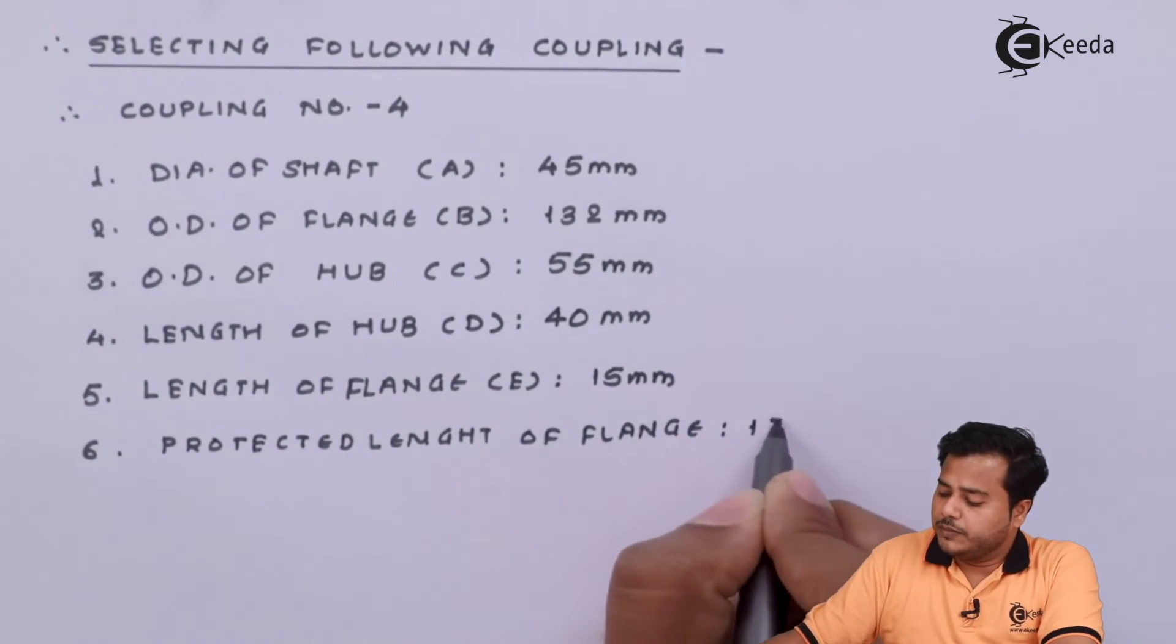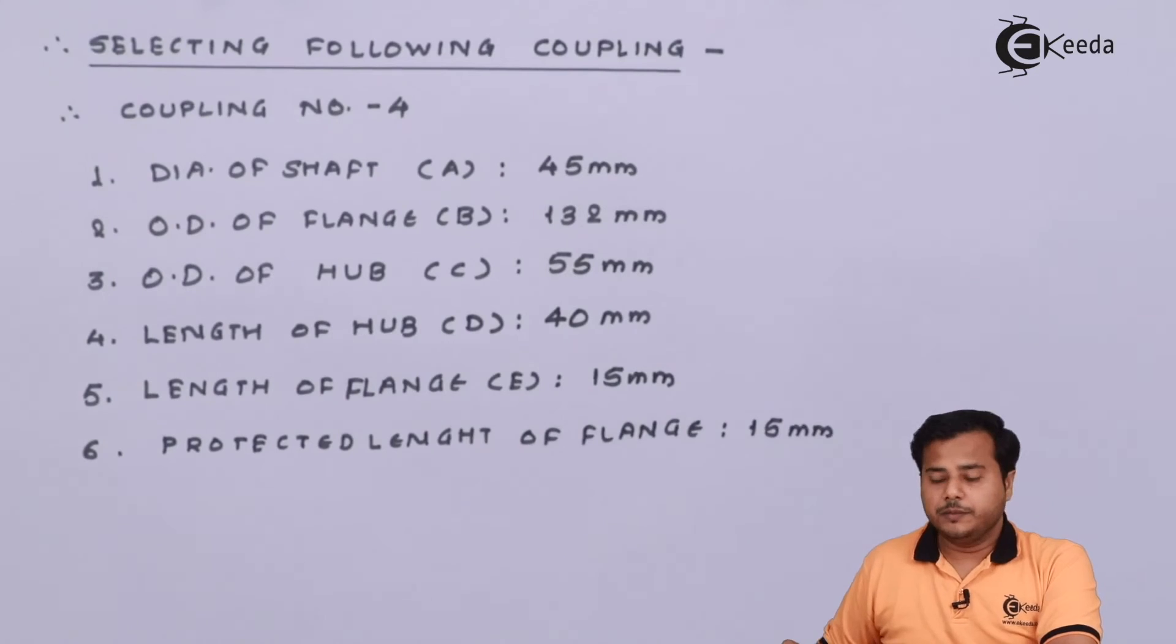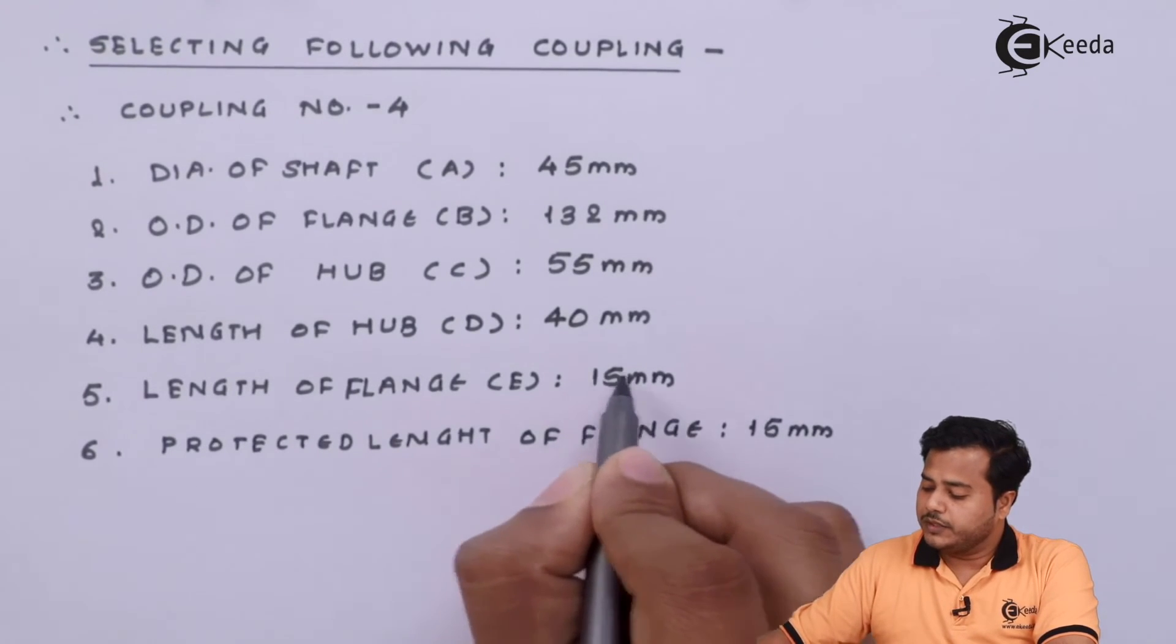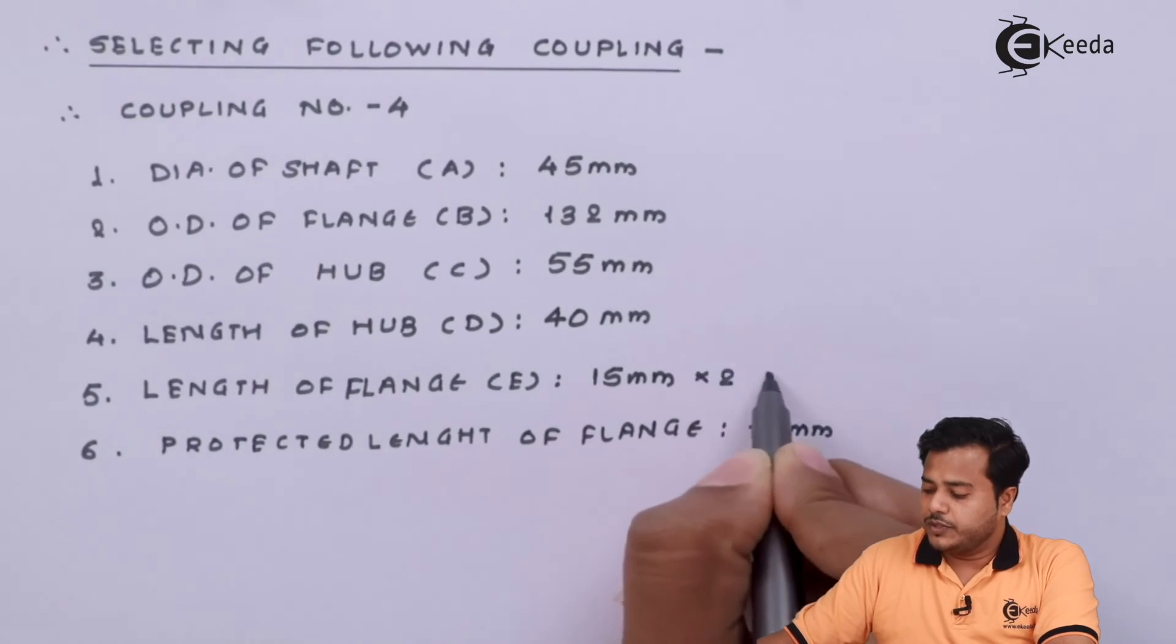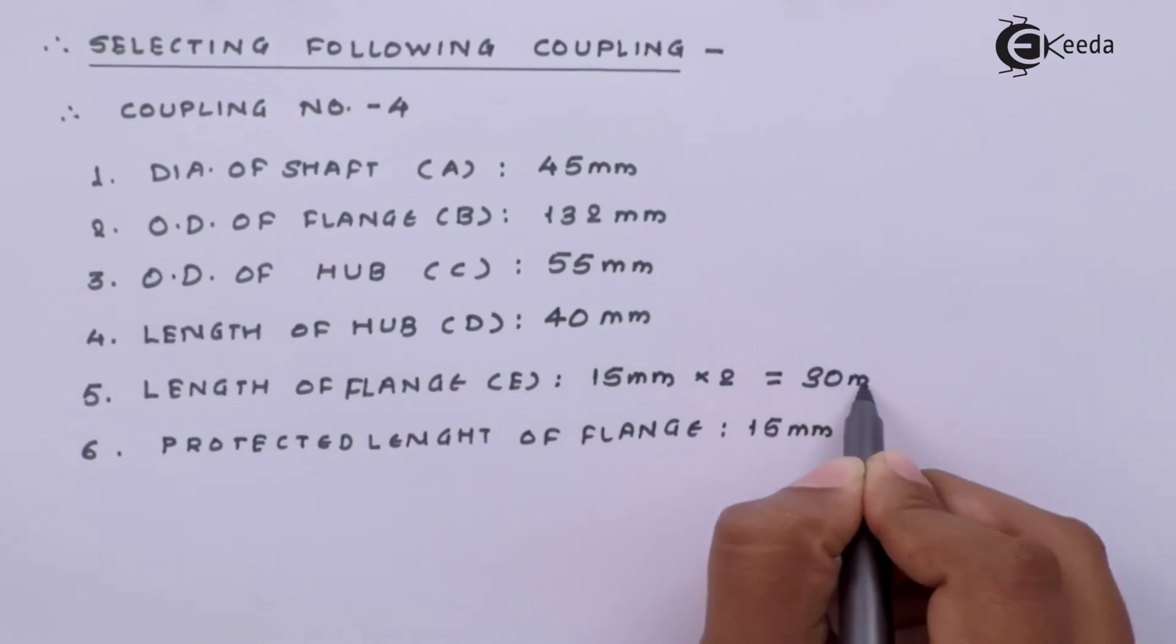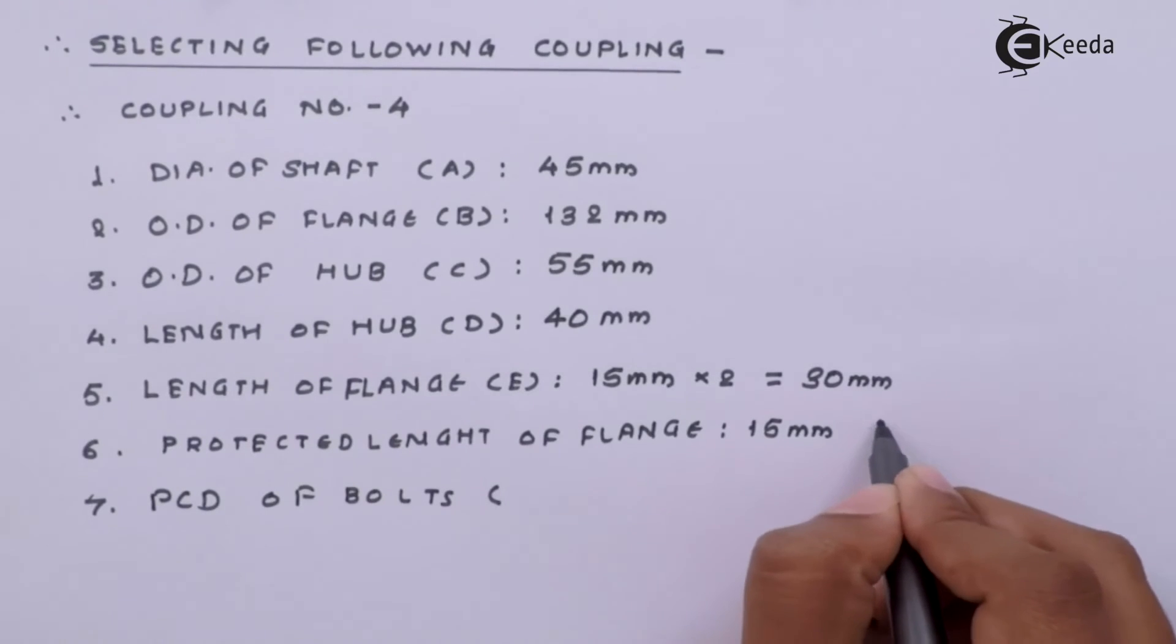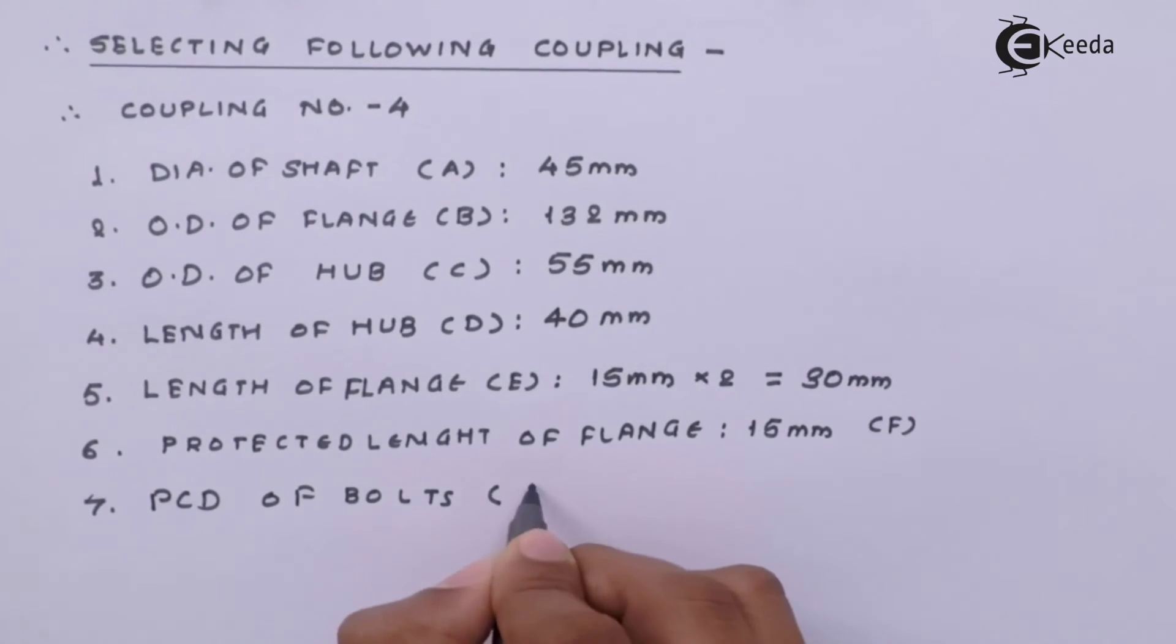Let me quickly make a correction where the length of flange is just not 15 millimeter it's twice that so it makes it 30 millimeter. The seventh parameter is the PCD of the bolt. Let's call this parameter as G, 90 millimeter.